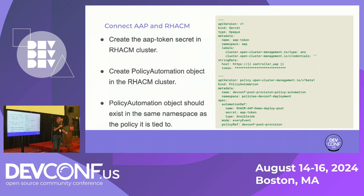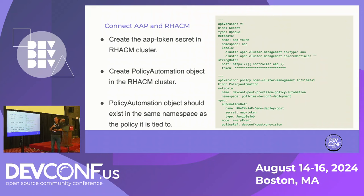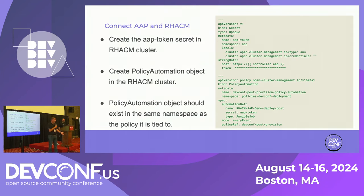Now that you have that credential, you need to link it to a policy. You make a policy automation object in the ACM hub cluster, tell it which policy you want to link AAP to, which credential to use, and what AAP job you want to run. Any time that policy is seen to not be in compliance, it will reach out to AAP and kick off the job. This can be used to post-provision, but also to create a ServiceNow ticket, do something in Jira, or send to PagerDuty to alert somebody — anything outside the scope of a Kubernetes cluster that AAP and Ansible can manage.